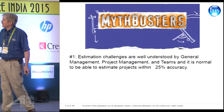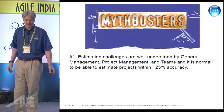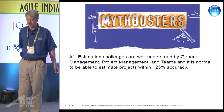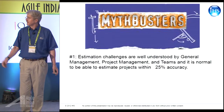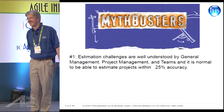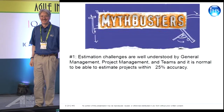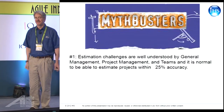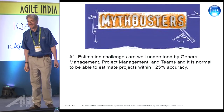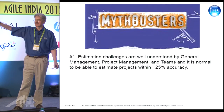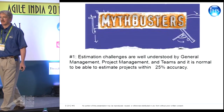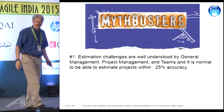The first myth: estimation challenges are well understood by general management, project management, and teams, and it's normal to expect to estimate projects within 25% accuracy. How many people think that's absolutely true? How come when I ask my team, they say 'absolutely, it's gonna be done, no problem'? How many people think it's gonna be busted? Mostly. How many people think it's plausible?